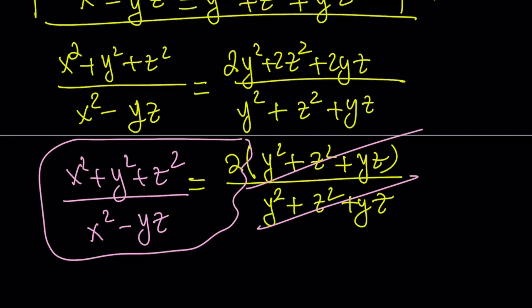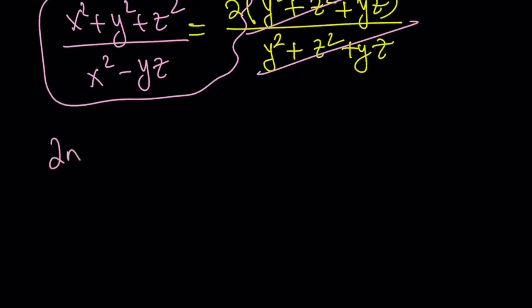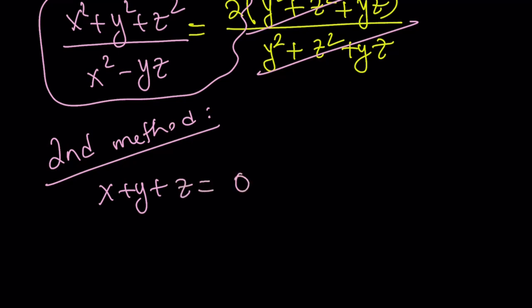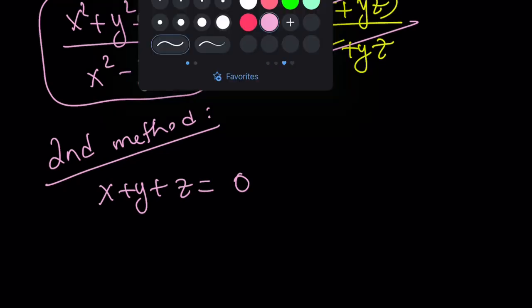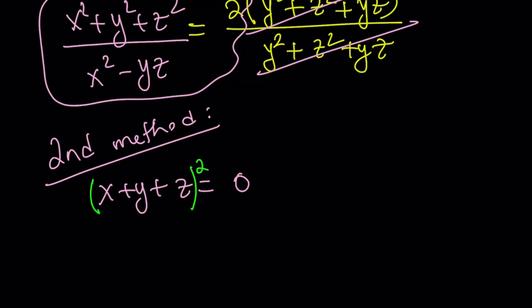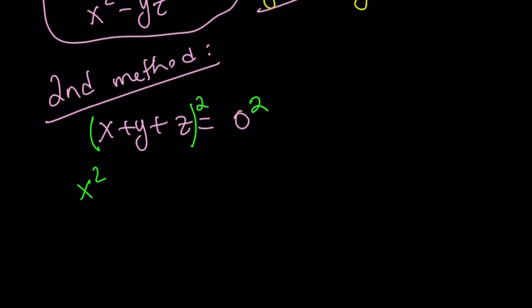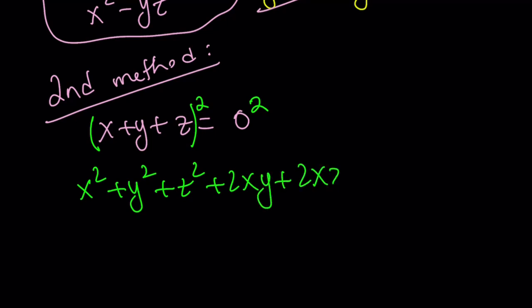That brings us to the end of the first method and the beginning of the second method. For the second method, I have x plus y plus z equals 0, and instead of isolating one of the variables, why not just square both sides? Squaring gives us on the left-hand side x squared plus y squared plus z squared plus 2xy plus 2xz plus 2yz, and on the right-hand side, 0.